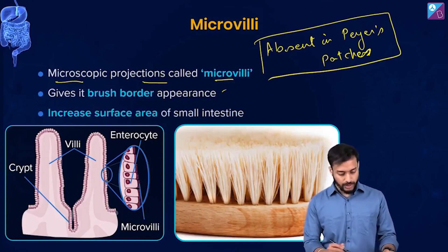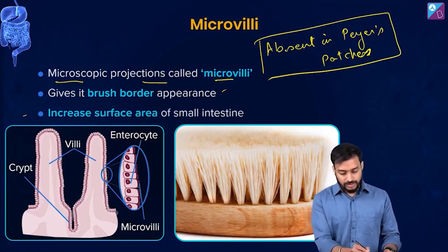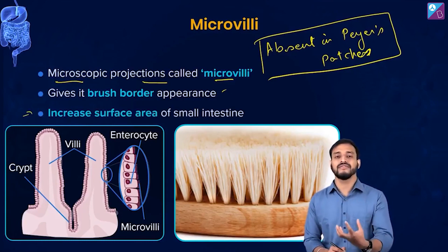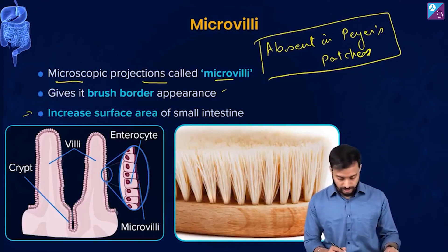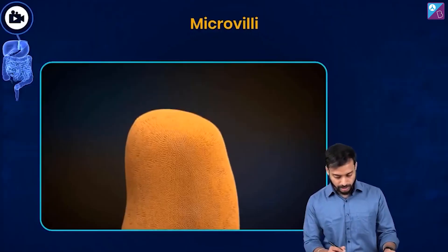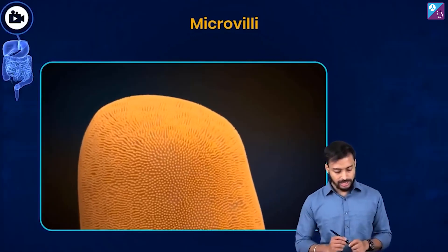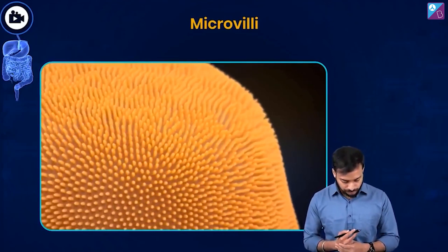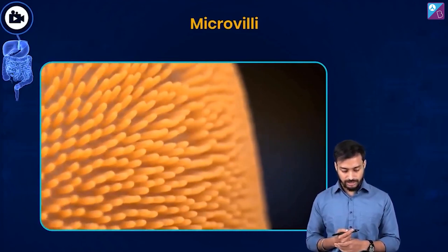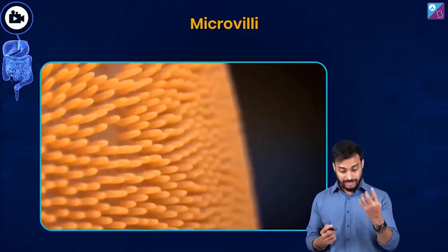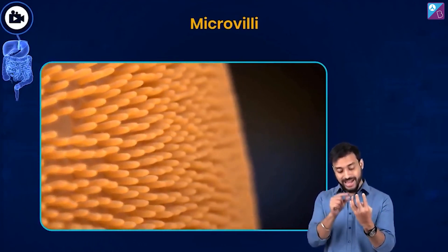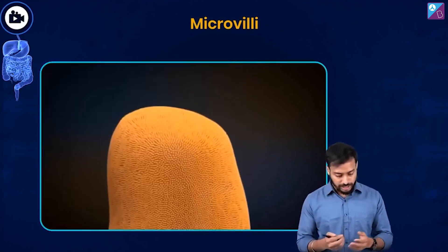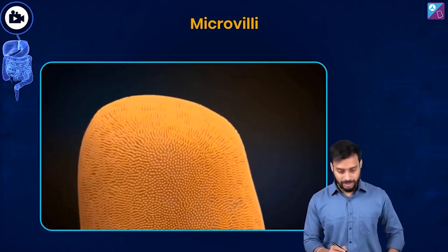So microvilli increase the absorptive surface area in the small intestine. To summarize: you have the finger-like projections which are the villi, and on those villi there are small hair-like projections — those are the microvilli.